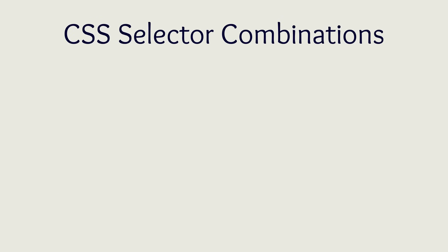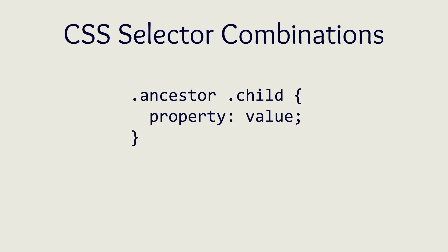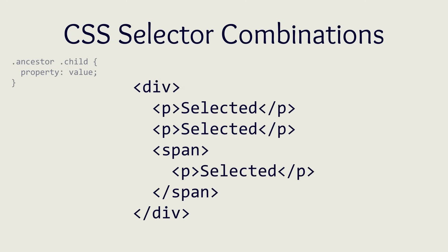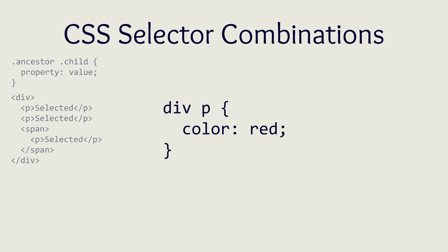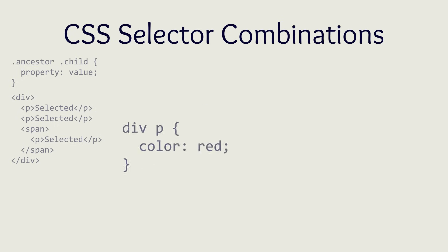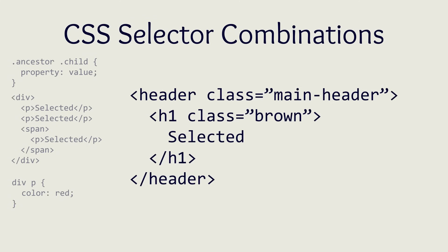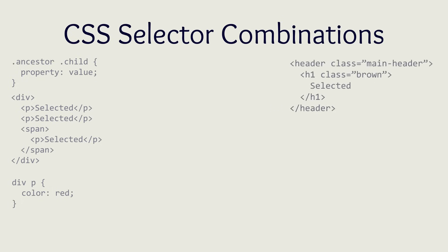Another way to combine selectors is to use multiple selectors to specify an ancestor of an element. To do this, you put a space between the ancestor and child selector. For example, to select all p tags inside a div, you simply use that selector. This will select all p tags that have a div as their ancestor, even if the div tag is not the direct parent of the p tag. This can be combined with the previous combination of selectors to make even more specific selectors, such as selecting all H1 tags with the class of brown that have a header with the class main-header as their ancestor.